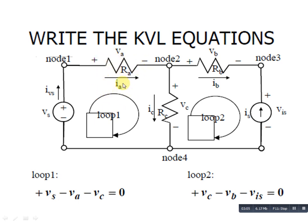The voltage corresponding to this resistance is va. Since we have a plus sign here, and we take plus as minus, this gives us minus va for loop 1. Again for the next resistance, plus sign is taken as minus, giving minus vc. Then going to the voltage source, this element has a minus sign, which is taken as a positive sign, giving plus vs. So this is our KVL equation for loop 1: minus va, minus vc, plus vs equals zero.